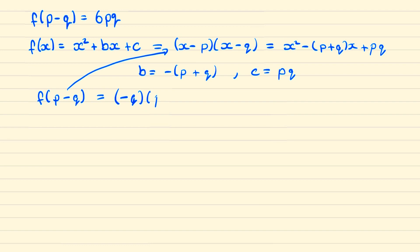This equals 6pq. Since we know q is prime and therefore can't be zero, we can divide by -q to show that p - 2q equals -6p.